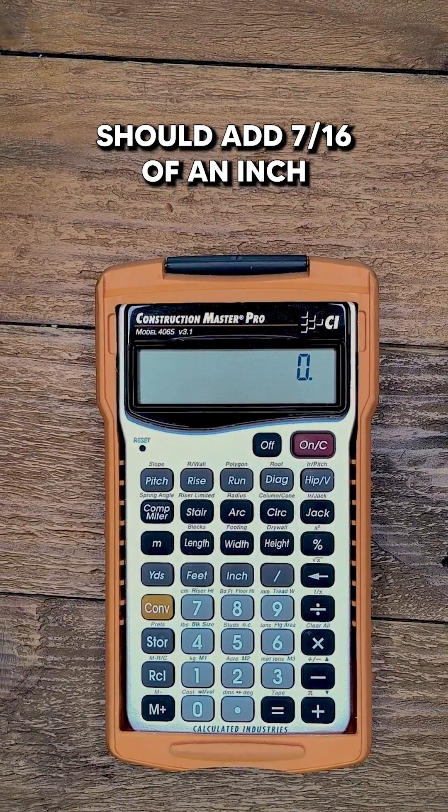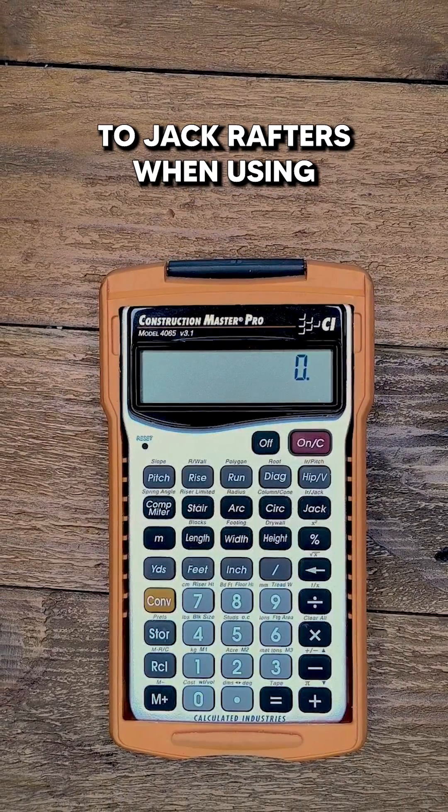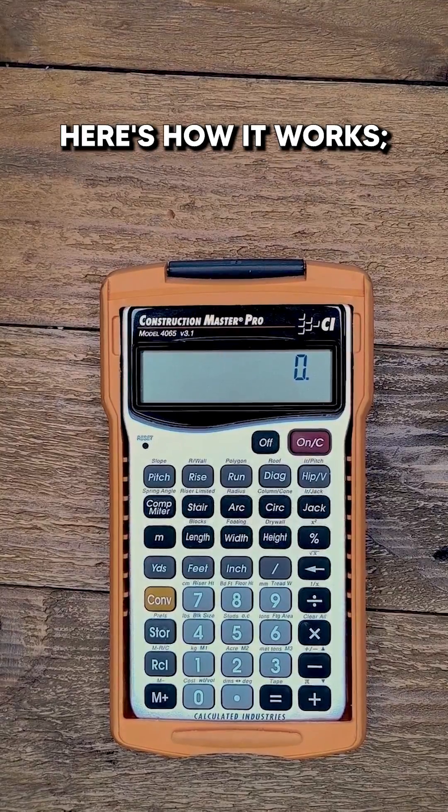Have you ever heard that you should add 7 sixteenths of an inch to jack rafters when using a Construction Master Pro? Here's how it works.